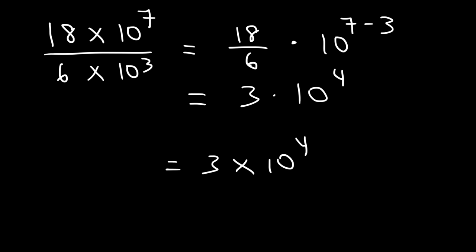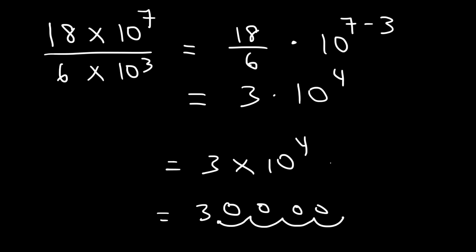If you want to convert that to standard notation, you need to move the decimal four units to the right, which gives 30,000.